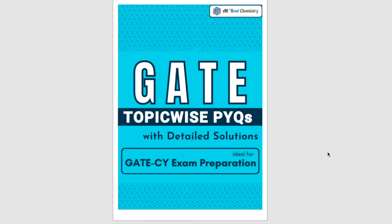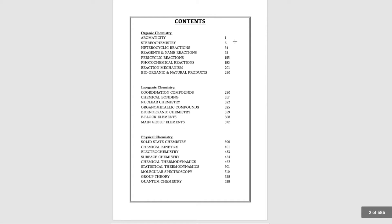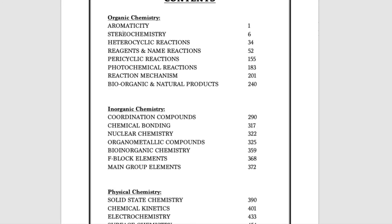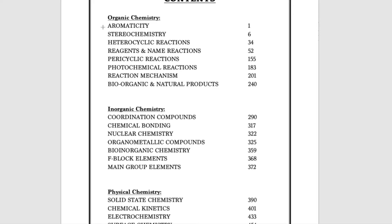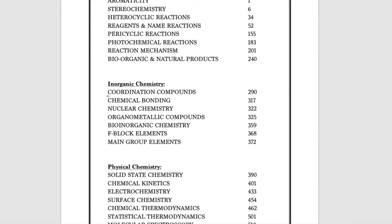Now let's get into it and see how exactly this ebook looks. This is the front page which you are going to get. The first page is basically the contents — it shows on what page number which chapter is there. Organic chemistry includes aromaticity, stereochemistry, heterocyclic reactions, reagents and name reactions, pericyclic reactions, photochemical reactions, reaction mechanism, and biorganic and natural products.